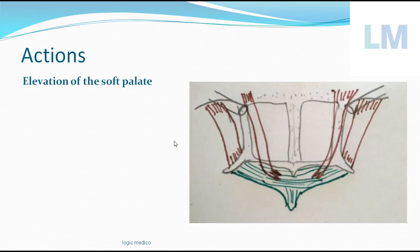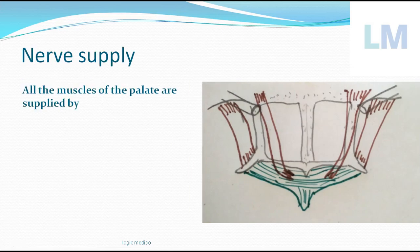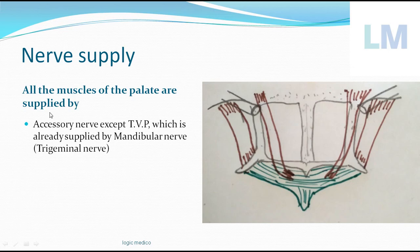All muscles of the soft palate are supplied by the 11th cranial nerve — the accessory nerve — except tensor veli palatini, which is supplied by the mandibular division of the trigeminal nerve. All remaining muscles including levator veli palatini are supplied by the accessory nerve. An easy way to remember: soft palate is above, so it's nerve 11; the tongue is below, so the next number is 12 — the hypoglossal nerve.